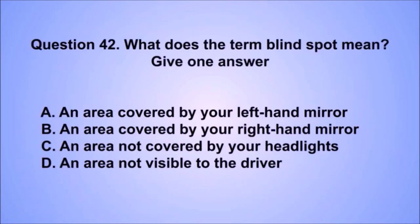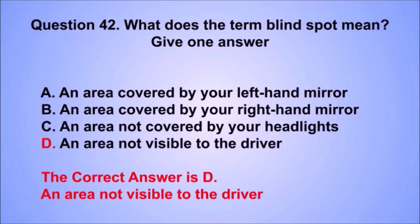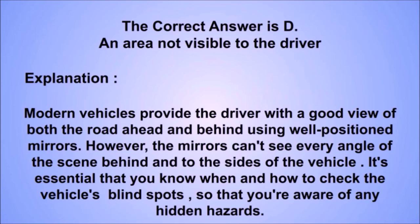Question 42. What does the term blind spot mean? The correct answer is D: An area not visible to the driver. Modern vehicles provide a good view of the road ahead and behind using well-positioned mirrors. However, mirrors can't see every angle. It's essential to know when and how to check the vehicle's blind spots so that you're aware of any hidden hazards.